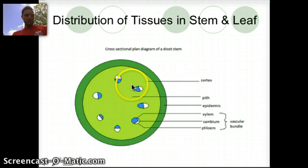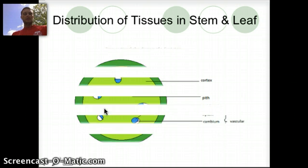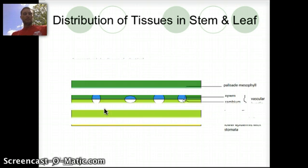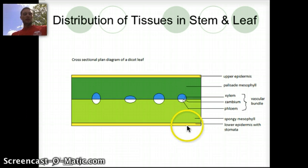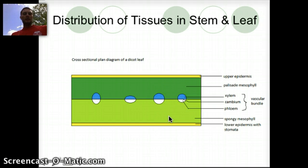The space in between the epidermis and surrounding the vascular bundle we can refer to as the cortex. If we look at a dicot leaf, we have a couple of different portions: an upper epidermis, kind of like the outer skin layer; a lower epidermis; a palisade mesophyll; xylem and phloem; and then a spongy mesophyll that's on the bottom of the leaf.